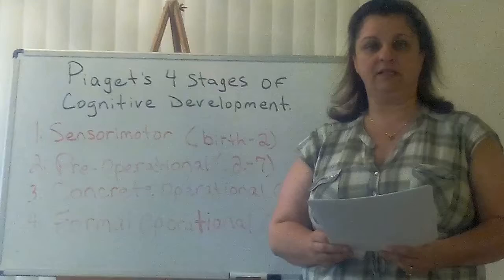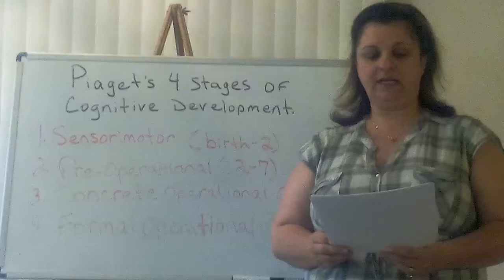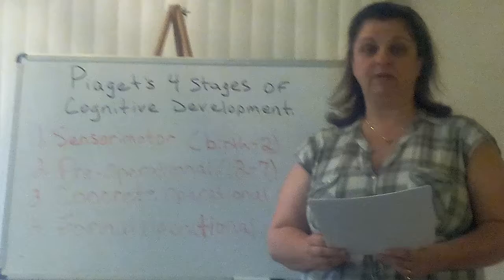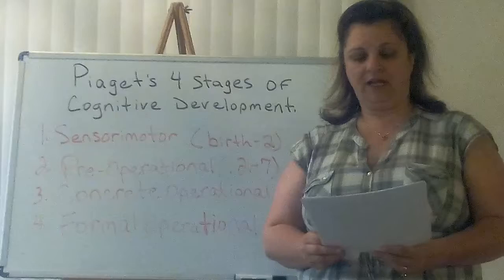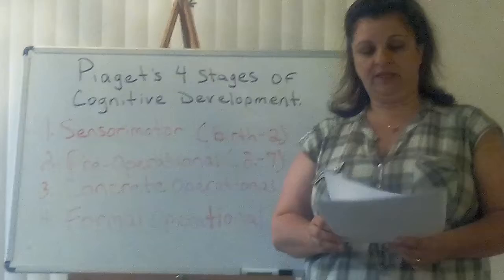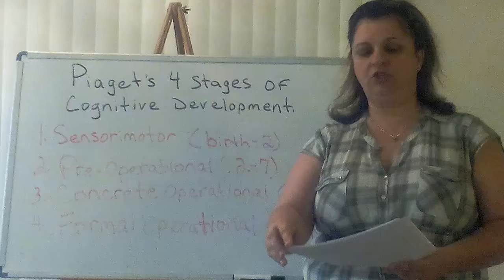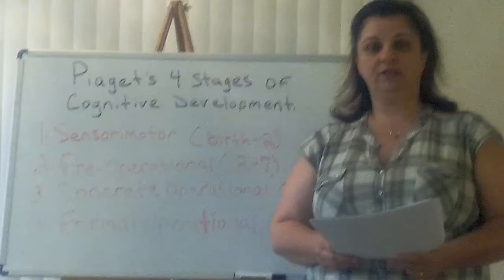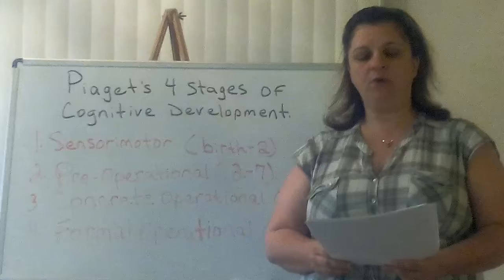To Piaget, cognitive development was a progressive reorganization of mental processes as a result of biological maturation and environmental experience. Children construct an understanding of the world around them and then experience differences between what they already know and what they discover in their environment. There are three basic components to Piaget's cognitive theory. Schemas, which are the building blocks of knowledge — defined as a cohesive, repeatable action sequence possessing component actions that are tightly interconnected and governed by a core meaning.